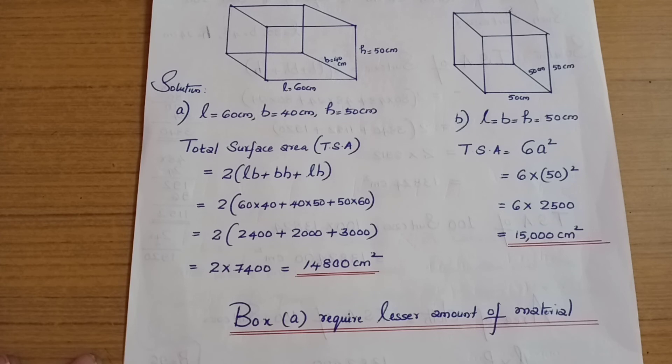That is 6 into 2500 equals 15,000 cm squared. This is the surface area of the cube.